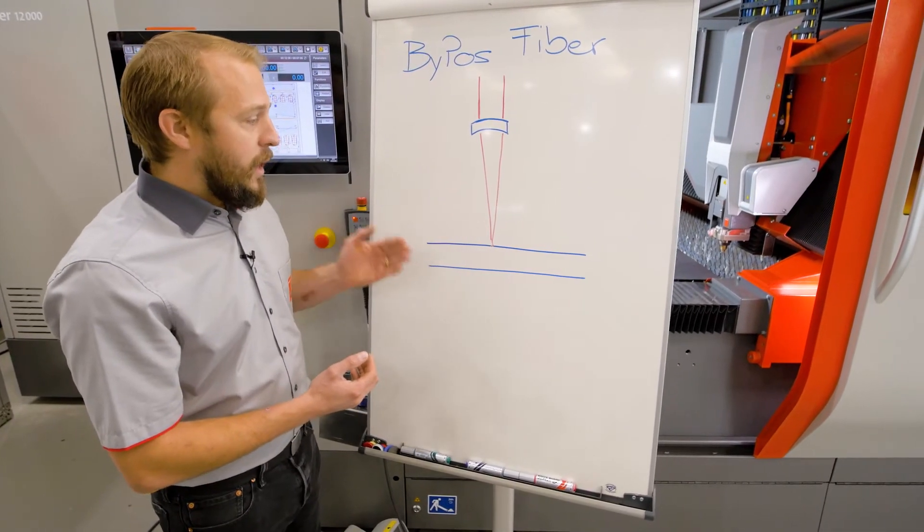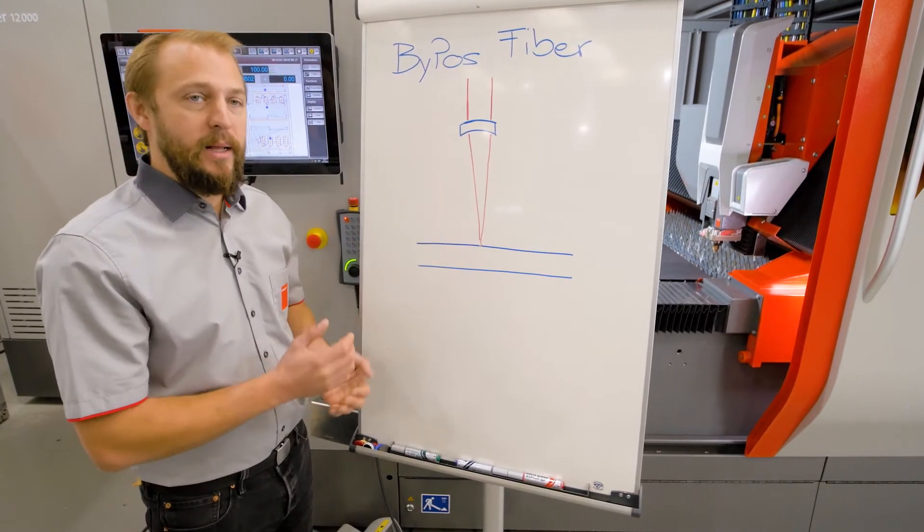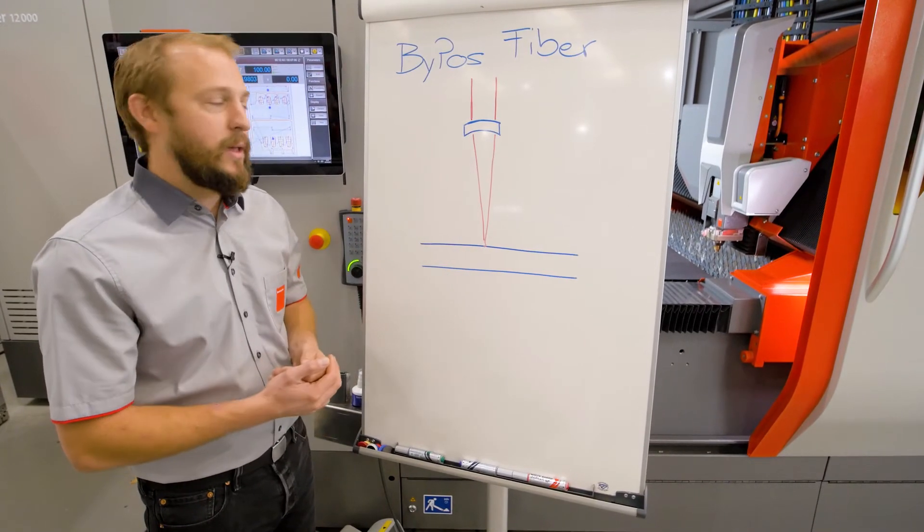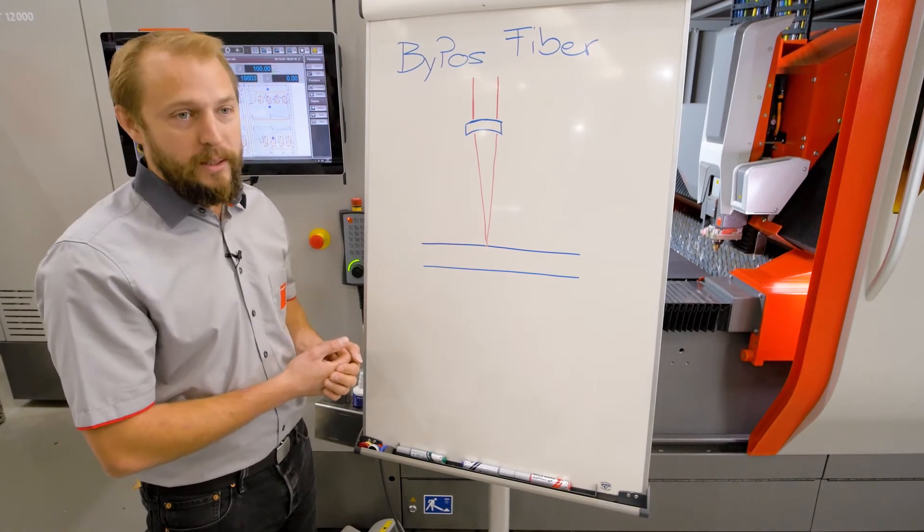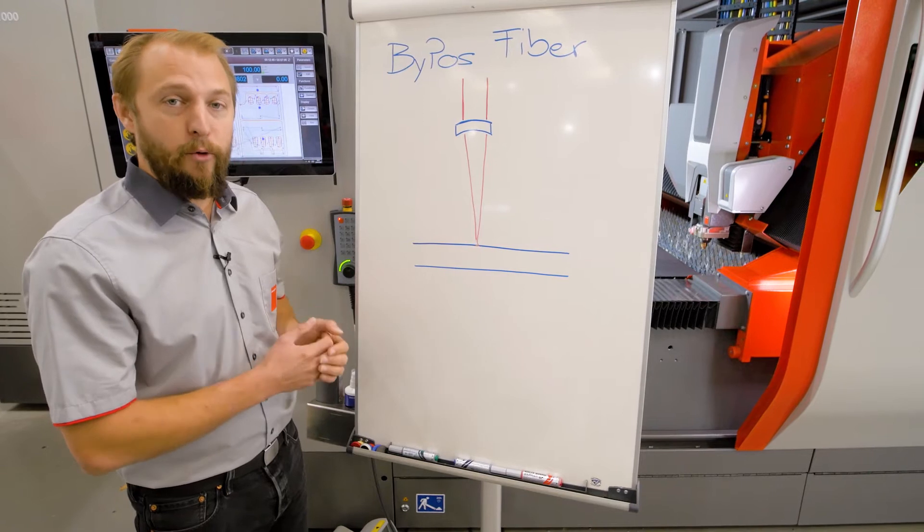So this spot has sometimes to be higher or lower in the material, depending the thickness of the material, the material kind and of course the processes. So for instance for piercing, it has to be in a different spot than for cutting.